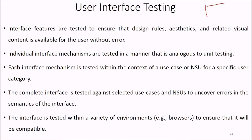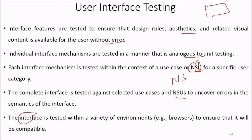The second major area is the user interface. Interface features are tested to ensure that design rules, aesthetics, and related visual content are available to the user without error. Individual interface mechanisms are tested in a manner analogous to unit testing. Each interface mechanism is tested within the context of a use case or NSU — a navigation semantic unit — for a specific user category. The complete interface is then tested against selected use cases and NSUs to uncover semantics of the interface.